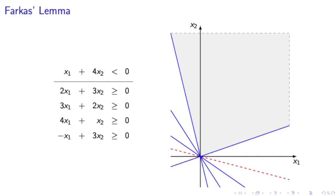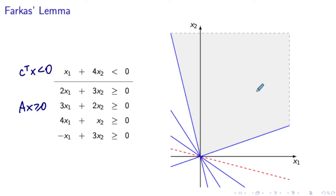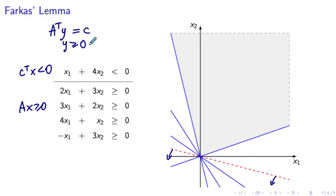Next, let's consider a geometrical illustration of the Farkas Lemma. We look at a system involving two variables x1 and x2, where Ax ≥ 0 and C transposed x < 0. Because we only have two variables, we can plot the region corresponding to Ax ≥ 0, which is given by the gray area — a polyhedral cone. The set of points satisfying C transposed x < 0 is given by the open half-plane below the red dashed line. Clearly the system has no solution because these two areas don't overlap. This means the second system, A transposed y = C with y ≥ 0, does have a solution.